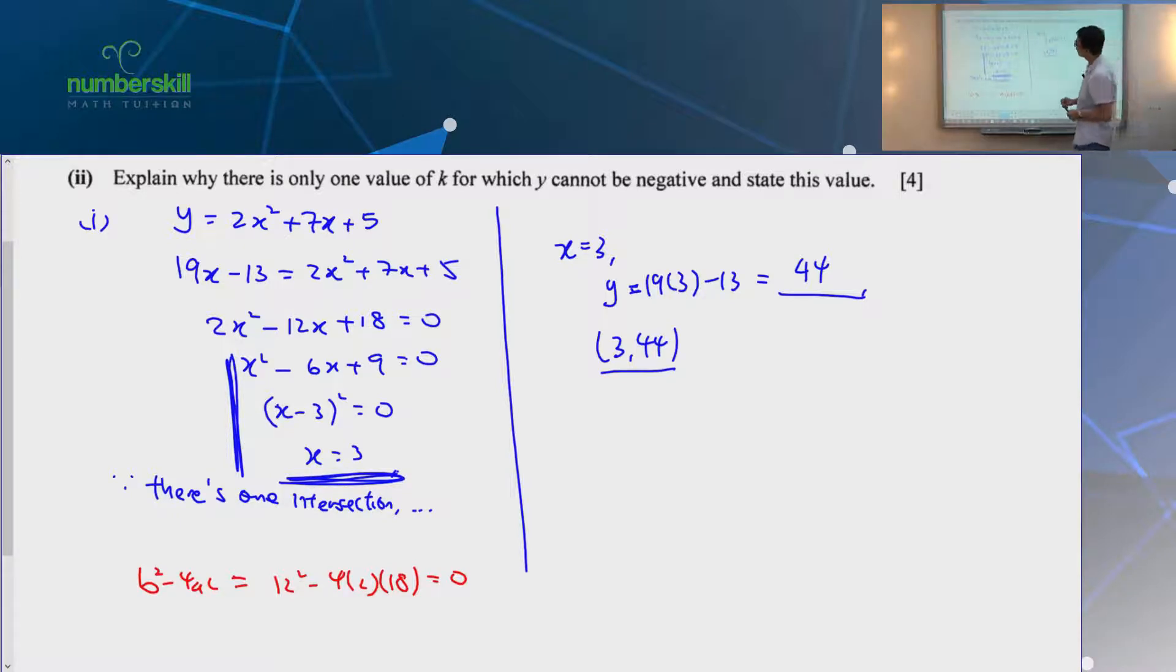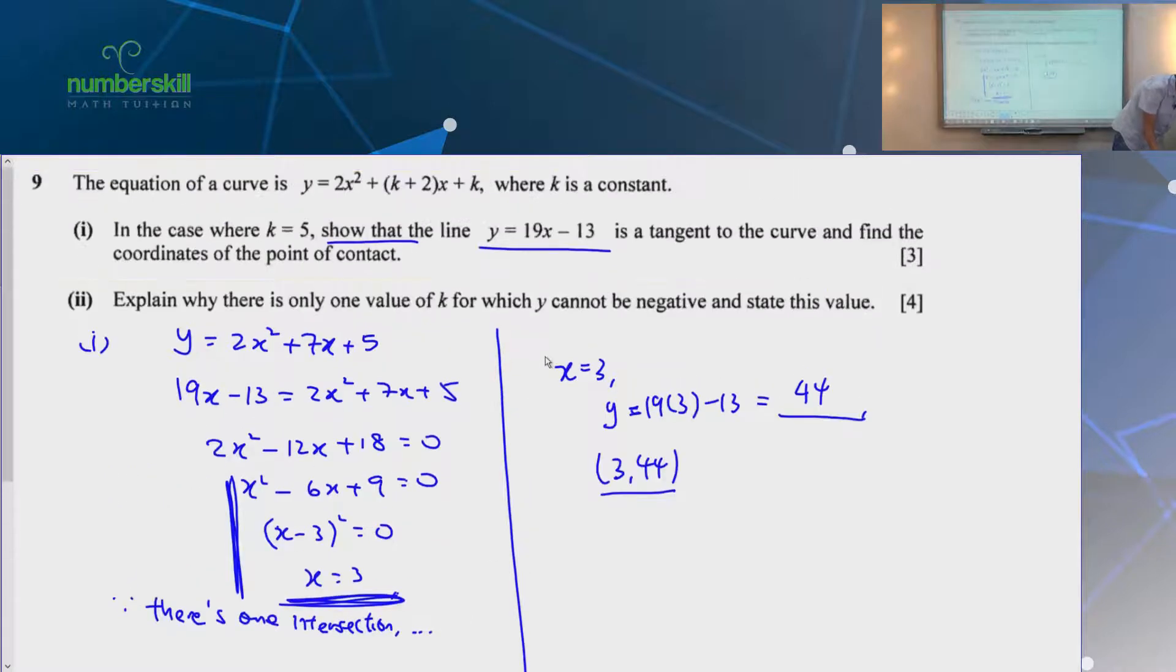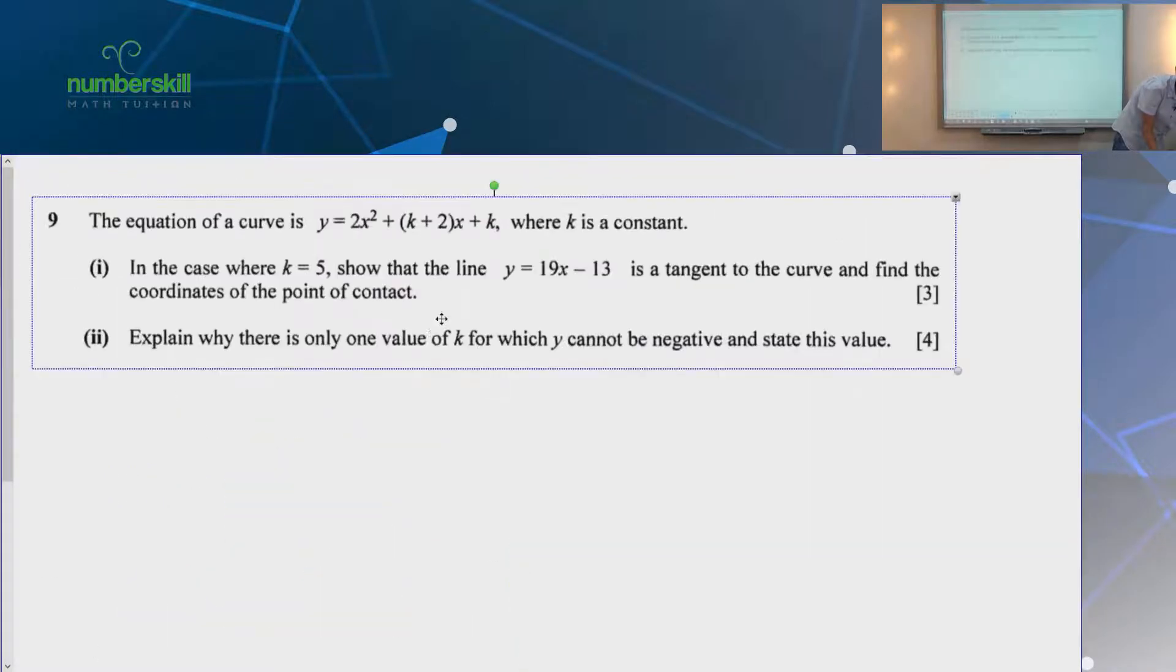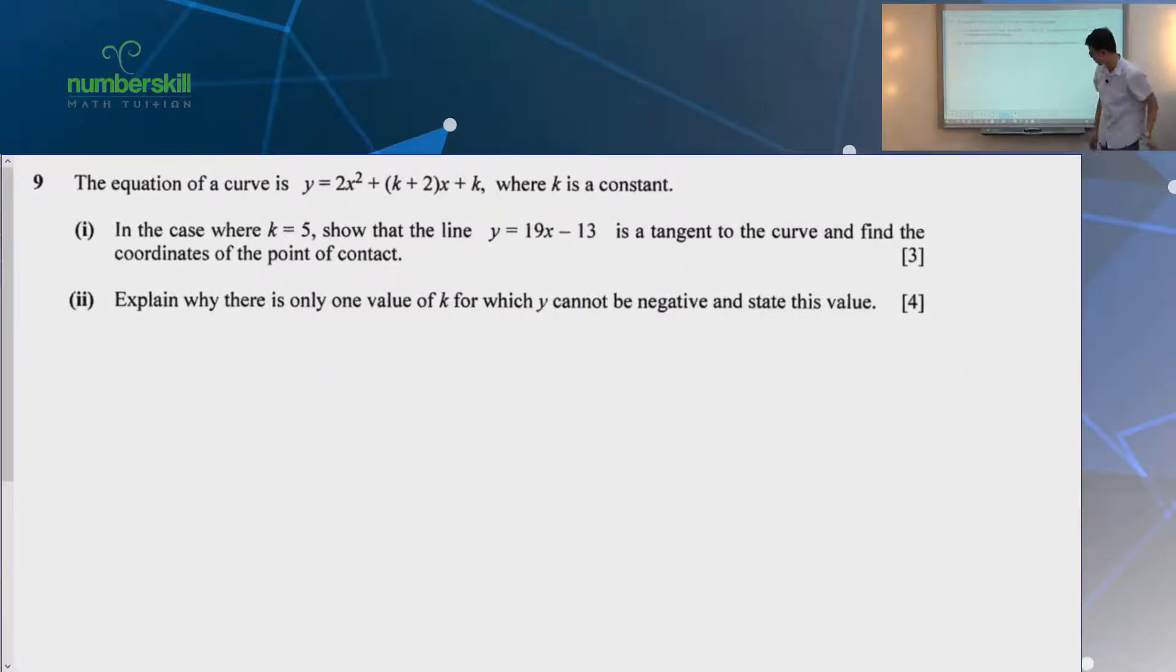Alright, next one. Explain why there's only one value of K for which Y cannot be negative. I think this is the one that we want to neck on. This is probably the one that is badly done. That a lot of people didn't get it right. You know what? No space. And it's got nothing to do with the first part anymore. Explain is the word. You have to have a clear sense of reasoning. Not just showing the math. You have to make sense of your maths. You understand?